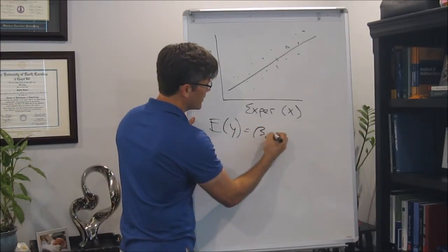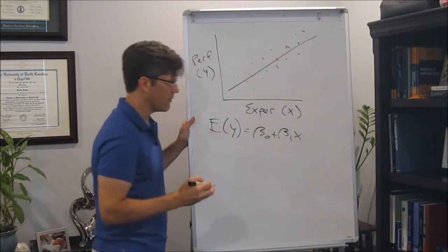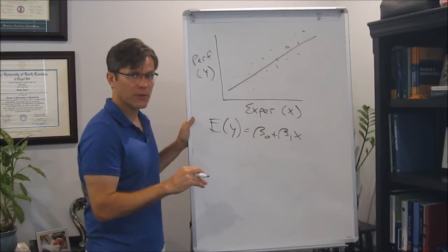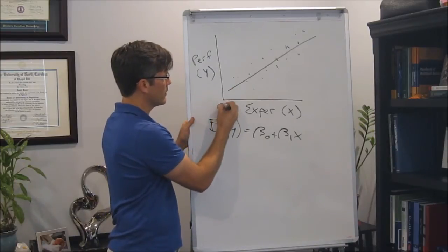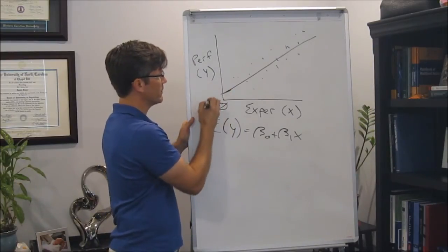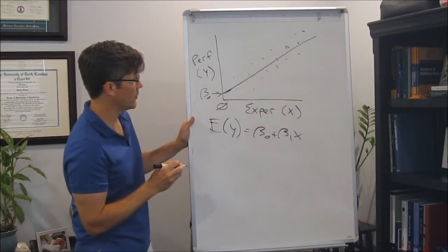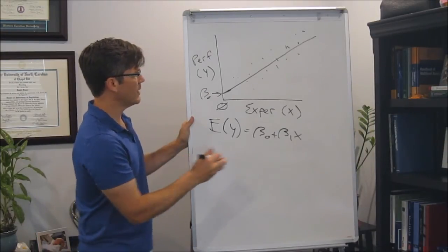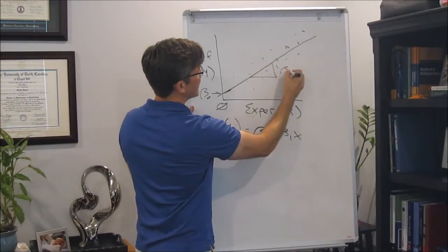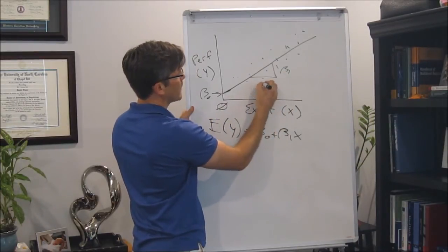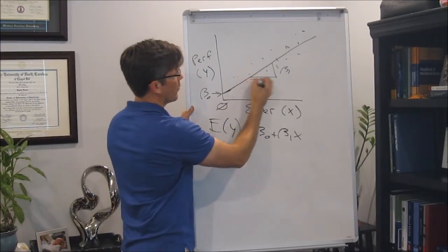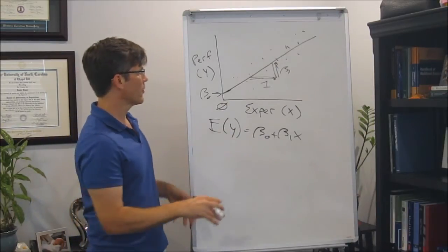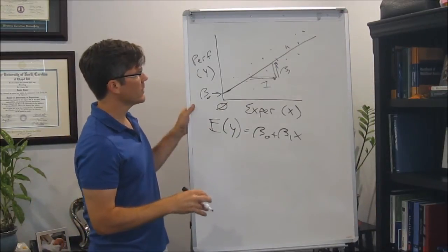We say the expected value of Y — the expected level of performance — is a linear function of X: beta naught plus beta 1 times X. Beta naught is our intercept; beta 1 is our slope. Beta naught is the expected value of Y wherever X is zero — that's where the regression line crosses the Y axis. Beta 1 is the expected change in Y per one unit change in X — the rise over run, or slope parameter.